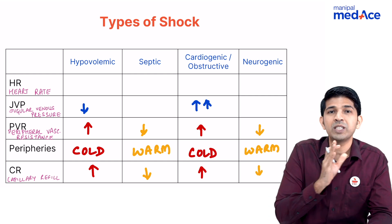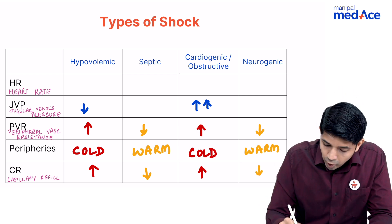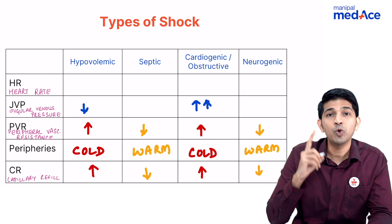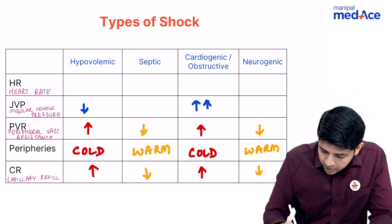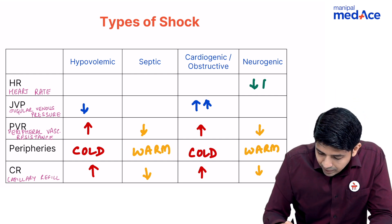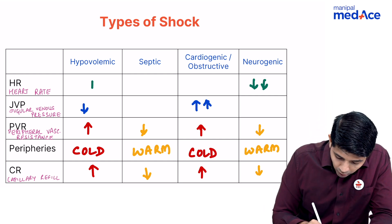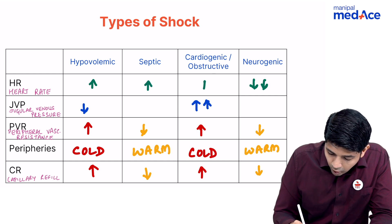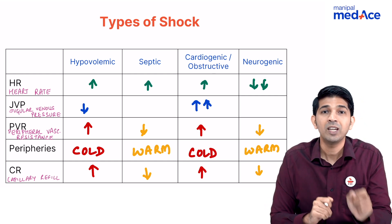How do you differentiate between septic and neurogenic shock? Look at heart rate. Neurogenic shock is the only shock which presents with bradycardia. All other shocks will have either a normal or increased heart rate, that is tachycardia.